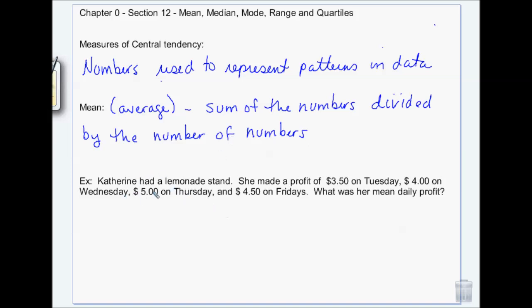So if we wanted to find the mean, Catherine had a lemonade stand. She made $3.50 on Tuesday, $4 on Wednesday, $5 on Thursday, and $4.50 on Friday. We want to know what her mean daily profit was. That's her average daily profit. So we add up the profits for each day, and we're adding up four days, and we're going to divide that by four. So this is $17 divided by four. So her average daily profit or her mean daily profit was $4.25 per day.